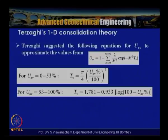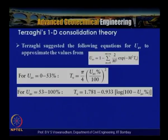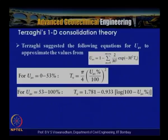Terzaghi suggested approximate equations for Uav. For Uav from 0 to 53% (52.6%, rounded to 53% in some references): Tv = (π/4)(Uav/100)². For Uav from 53% to 100%: Tv = 1.781 − 0.933·log(100 − Uav%), where Uav is expressed as a percentage.